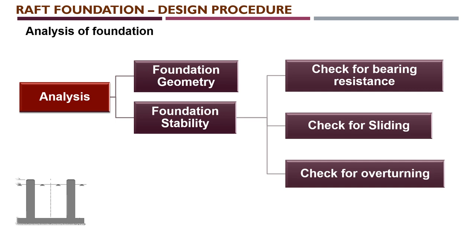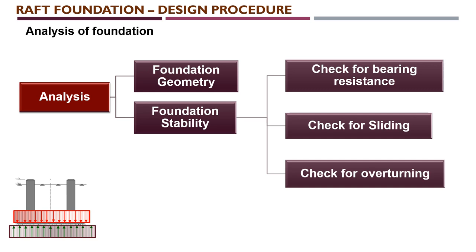The second part of analysis is foundation stability. Once the foundation geometry is arrived at, we need to check foundation stability along with the foundation forces. Three types of stability checks are required. The first is bearing resistance: all the forces applied on the structure and transferred to the foundation are distributed to the soil as uniform pressure, shown in red in the pressure diagram in a downward direction. Due to Newton's opposite reaction, the soil provides an upward reaction shown in green.